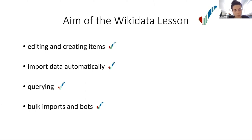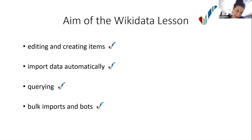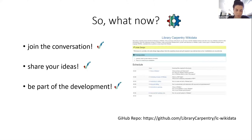There is also one episode dedicated to the query service of Wikidata and how librarians can use it to create graphs or tables automatically. Last but not least, we plan one topic for bots and maybe how to work with Wikidata in the command line to use it even more efficiently.